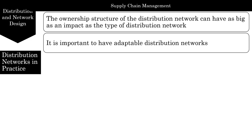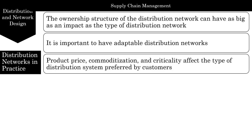Walmart, through trial and error, has adapted its distribution network to take advantage of the internet along with its existing retail network. Product price, commoditization, and criticality affect the type of distribution system preferred by customers. Interaction between buyer and seller takes time and resources, so it is more convenient for a buyer to deal with a single enterprise that can deliver a full line of products — you would rather go to a large supermarket where everything is available than visit multiple individual stores.